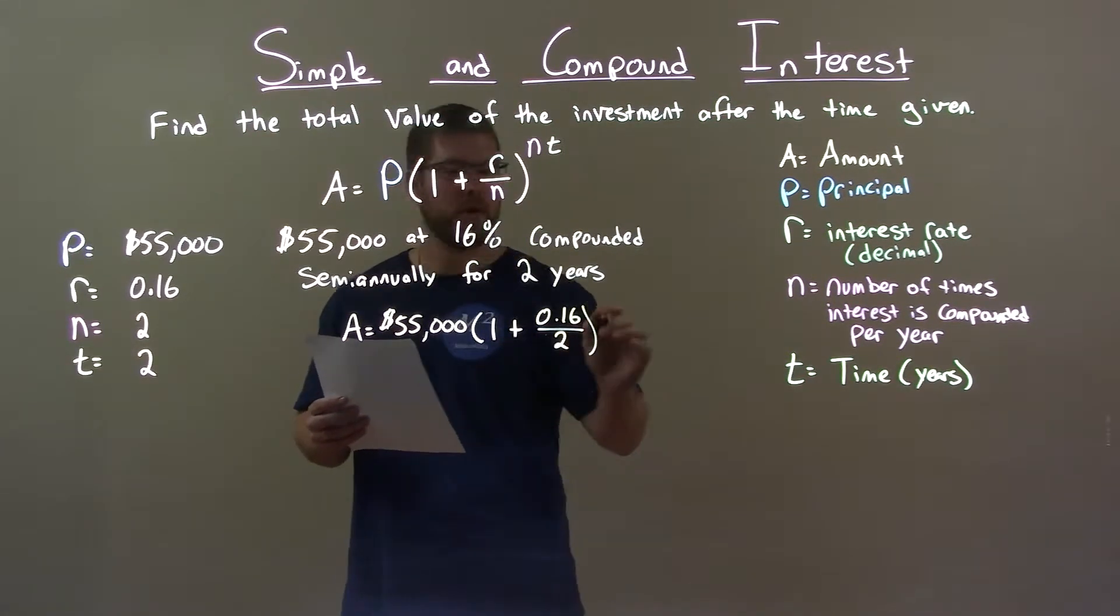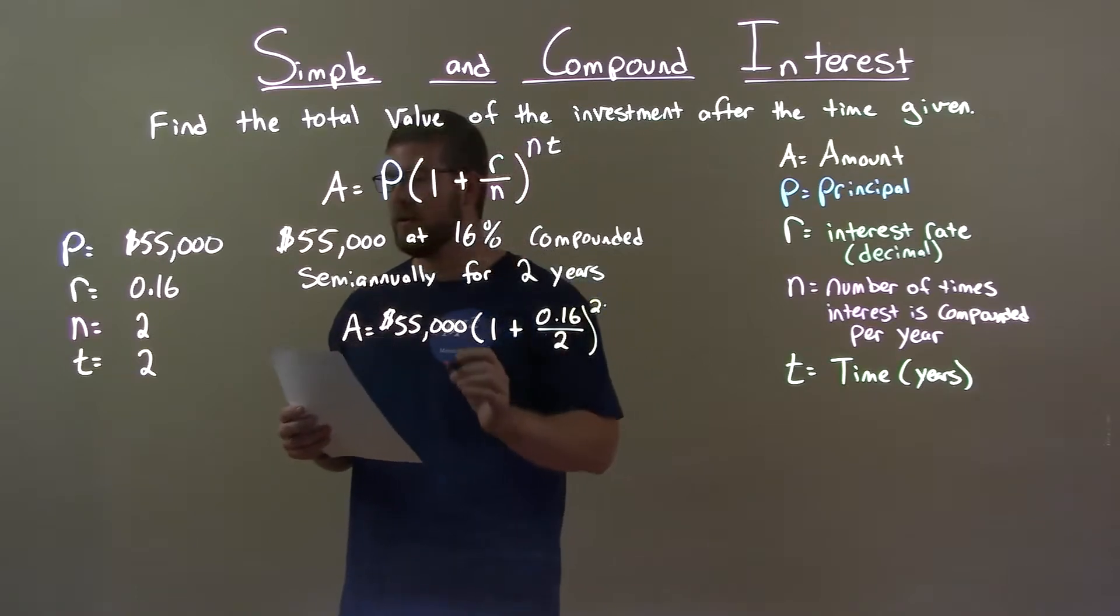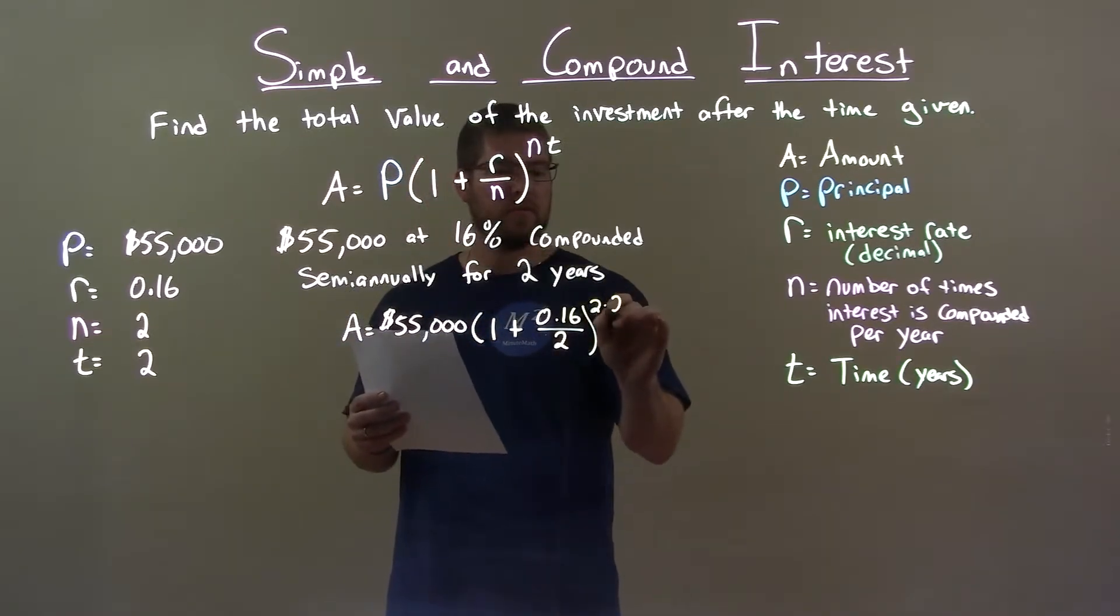to the exponent. Keep the 2 there, same N value, and t is time in years, which is 2.